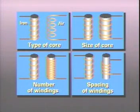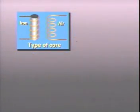There are four factors that determine the inductance value of an inductor. First is the type of core of the inductor. A highly permeable core, like iron, concentrates the flux lines. This increases the amount of CEMF and the opposition to current.